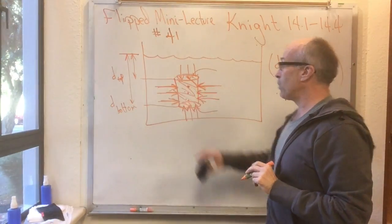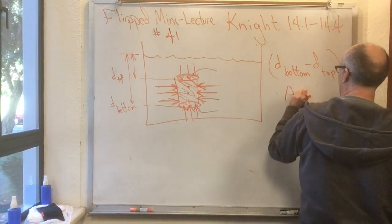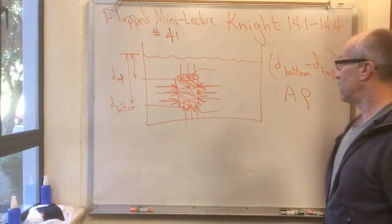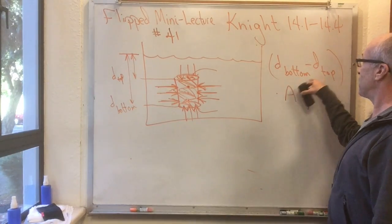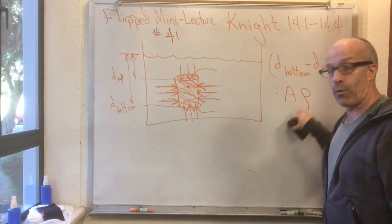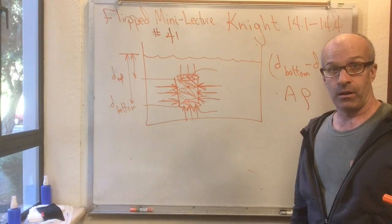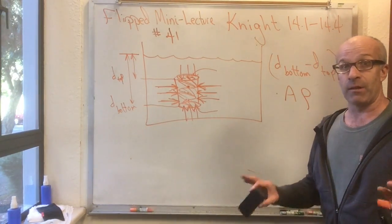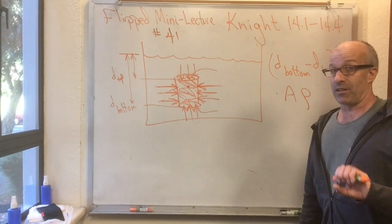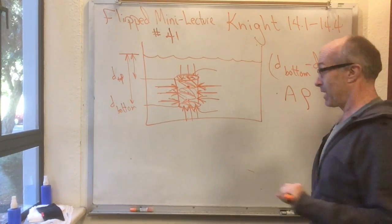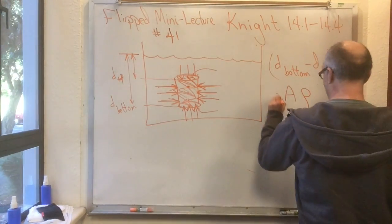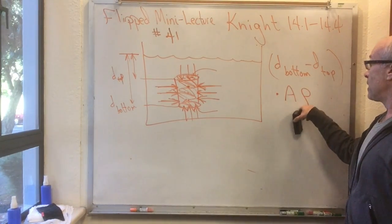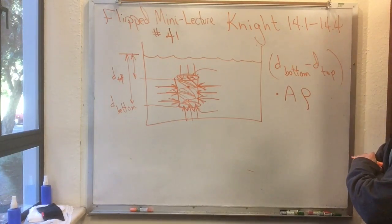If this can is full of water with density rho, then the mass of the water in the can is the volume (d-bottom minus d-top) times A, times density rho. We're not going to worry about density changing with depth — we only worry about pressure changing with depth. Water is extremely incompressible, so its density does not change much with depth even though its pressure changes a lot.